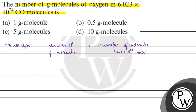Now, the number of gram molecules of CO will be equal to 6.023 × 10²⁴ divided by 6.023 × 10²³, which comes out to 10. So, the number of gram molecules of CO is 10.